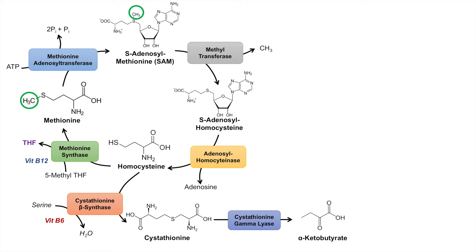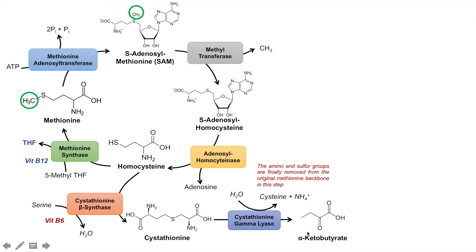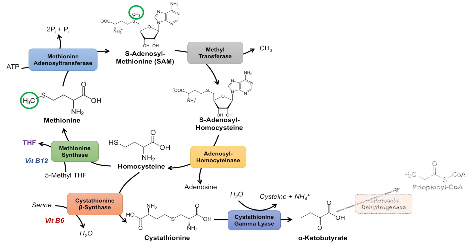Cystathionine itself can then be acted on by cystathionine gamma lyase to form alpha-ketobutyrate. In this process, it takes a water molecule and essentially cleaves off the additional carbon skeleton that was added before, giving us cysteine and an ammonium group. Alpha-ketobutyrate can then be acted on by alpha-ketoacid dehydrogenase to form propionyl-CoA — removing a carbon dioxide and adding coenzyme A.